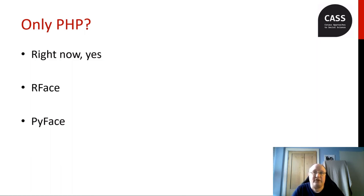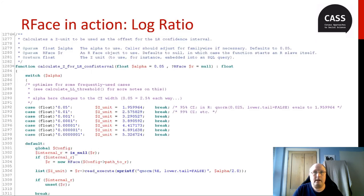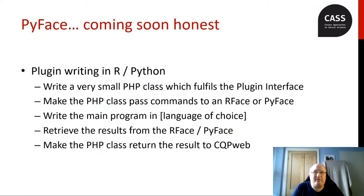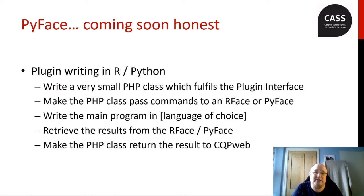Two of the things plugins can talk to are the R face and the PI face, which are alternative ways of accessing R and Python. CQP Web itself uses the R face for some of the maths involved in calculating log ratio confidence intervals; the code on screen illustrates the way CQP Web passes a statistical command to R when calculating the log ratio. Plugins can use the R face for whatever they like. The PI face, which allows commands to be fed into a Python process in the same way, is still work in progress. But the faces allow you to write most of your plugin in either R or Python — whichever your language of choice is — and then the actual plugin PHP class can just request an R face or PI face, pass in the data and commands, retrieve the results, and return them to CQP Web.